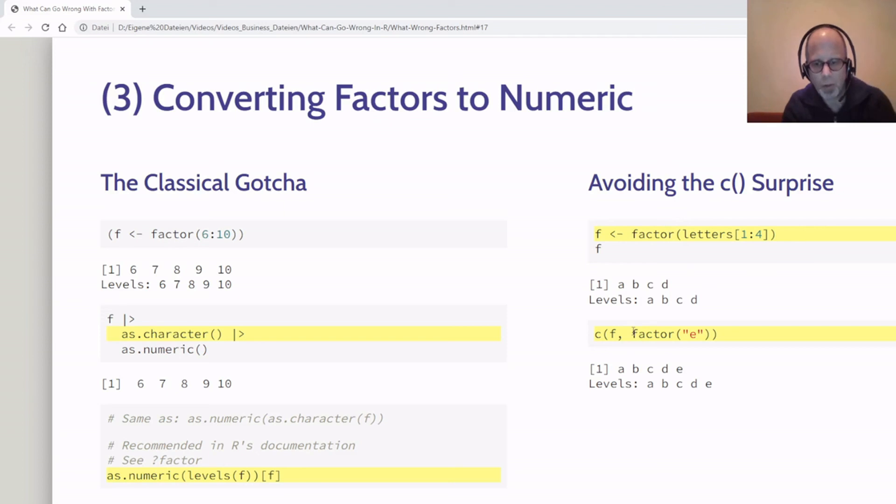About this C surprise we saw on the previous slide—I'm going back to this example and you may have guessed it, we saw it before. In this video we're using the letters from A to D again, and when we add the letter E, we have to make sure it is a factor, and then the C function gives us the expected result. If we leave out this factor part here in this highlighted code, we get the unexpected result with the numbers 1 to 4 and the element E as a character vector. But if both f and e are factors, we get the expected result.